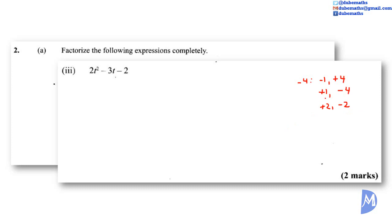Positive 1 and negative 4 add to give negative 3. So now we're going to replace negative 3t with positive 1t minus 4t. So we get it's equal to 2t squared plus 1t or t minus 4t minus 2. Now we're going to factorize by grouping.